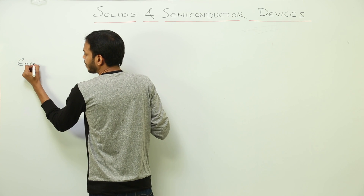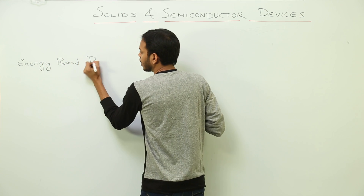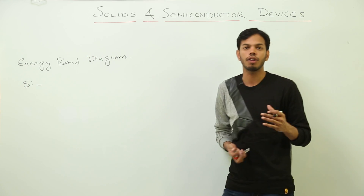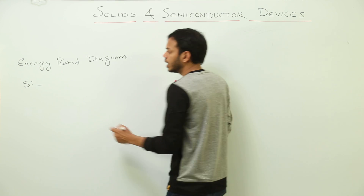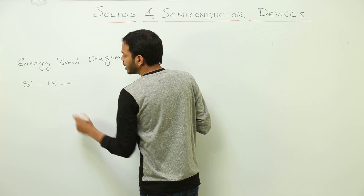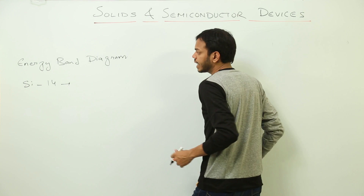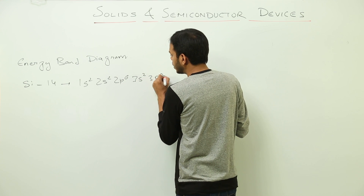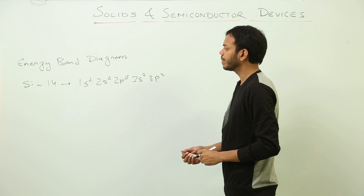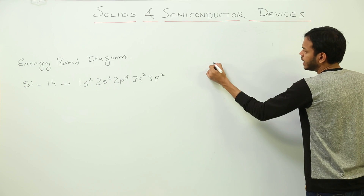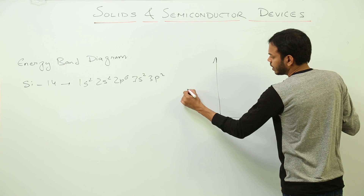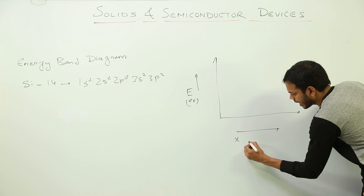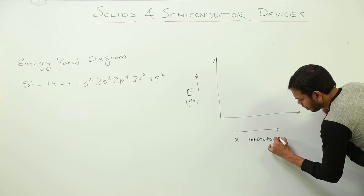The first topic of the chapter is the energy band diagram. We'll take silicon as our example, since we'll later classify it as a semiconductor. Silicon has atomic number 14, with electronic configuration: 1s² 2s² 2p⁶ 3s² 3p². On the diagram, the y-axis shows energy in electron volts and the x-axis shows inter-atomic separation.